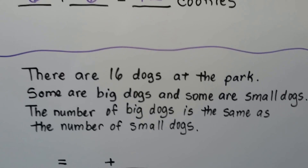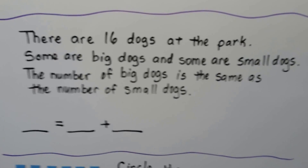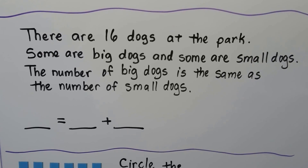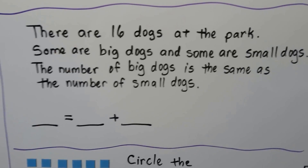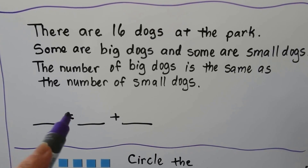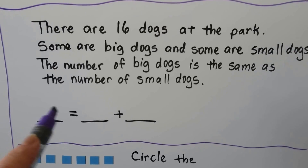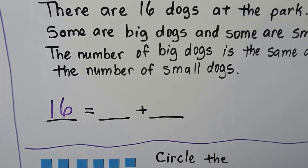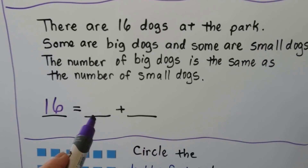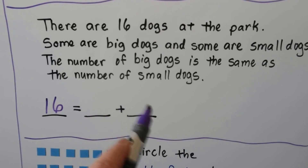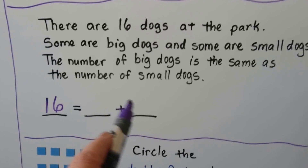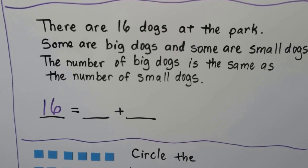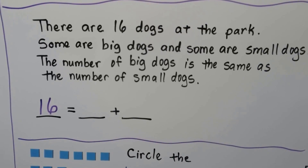There are 16 dogs at the park. Some are big dogs and some are small dogs. The number of big dogs is the same as the number of small dogs. The equals sign and the sum go in the front, so we have 16 here because that's how many there are in all. We need to figure out what addends could go here that are the same numbers — doubles.